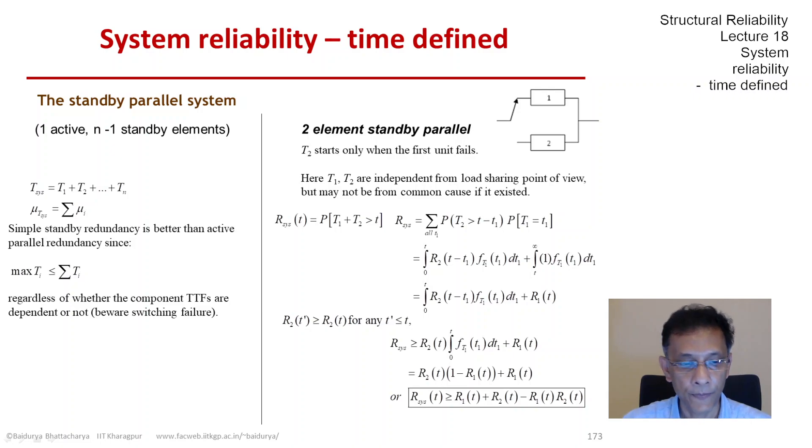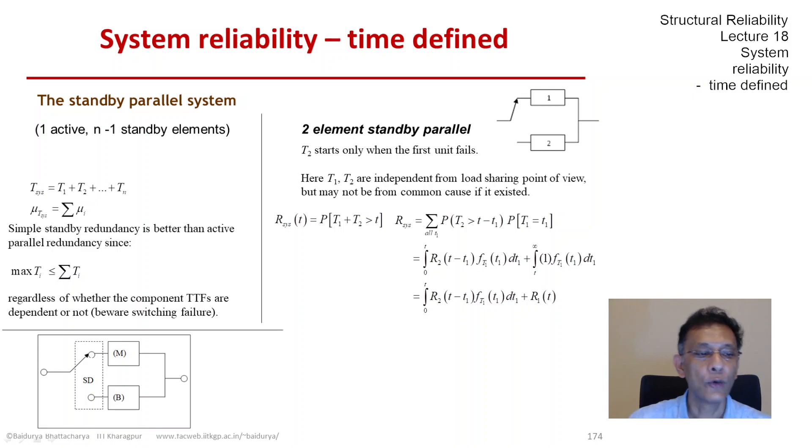We can bring in switching failure now. We have a switching device which at first is connected to M, the main unit, and B is the backup unit. Once M fails, the switch brings unit B online. Hopefully this switchover is seamless, but switches do fail and age. The longer the switch waits, aging happens. If the first element fails and the main unit fails, the backup may never come online. That's a consideration we have to keep in mind.